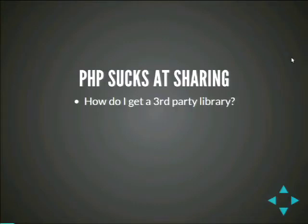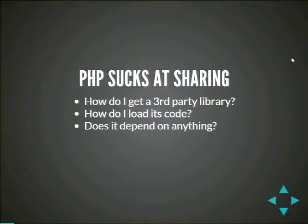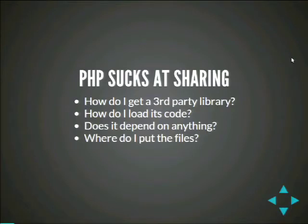For example, you're writing a project in PHP and you want to use some existing third-party library. Where do you get it from? How do you find it? Once you actually have a copy of it, how do you load it? How do you get its code into your runtime? How do you actually use it? Does it depend on another project? If so, how do you get that one? Are you going to get it from the same place you got the first one? Only sometimes. Where are you going to put the files in your project? Do they belong to your project? Should you be checking someone else's code into your repository?